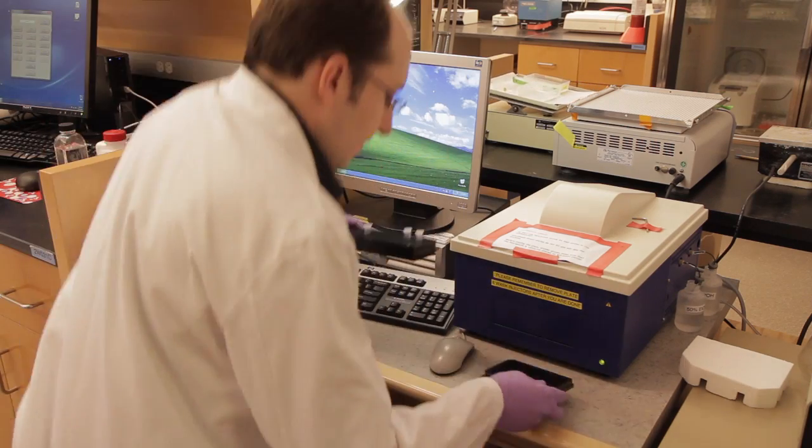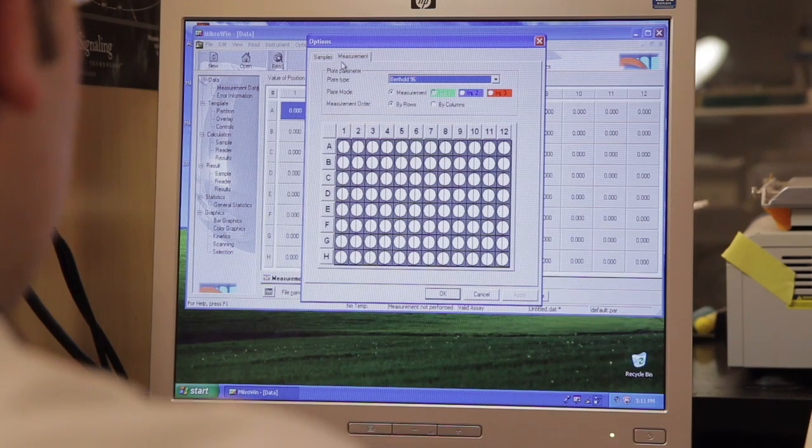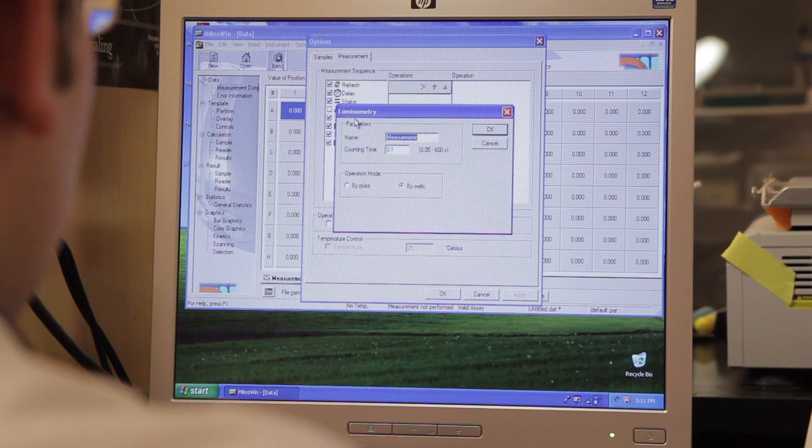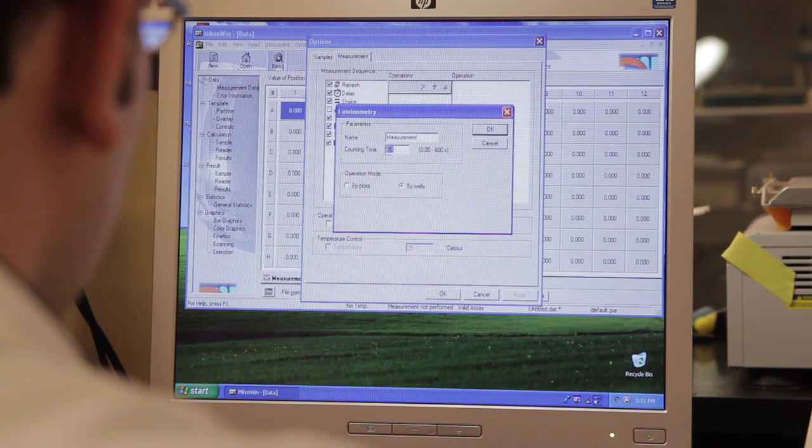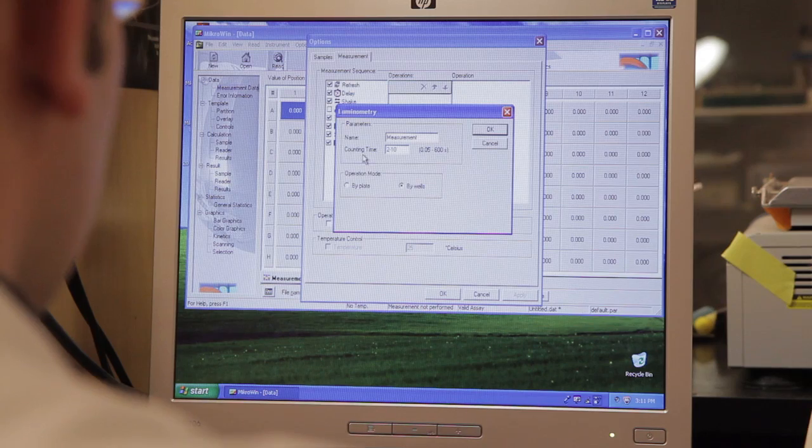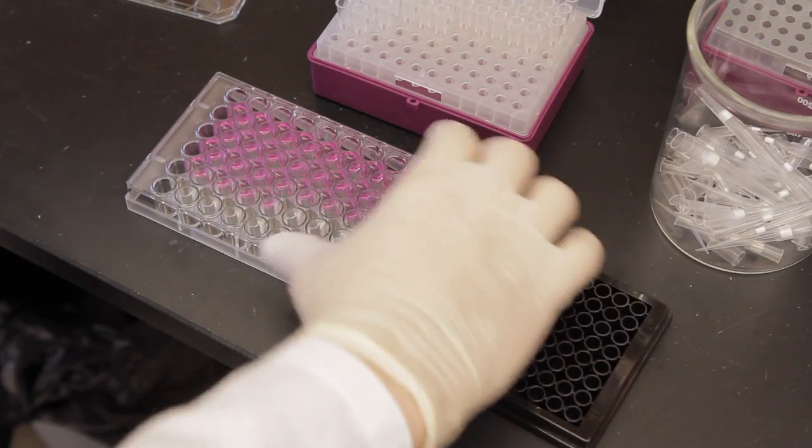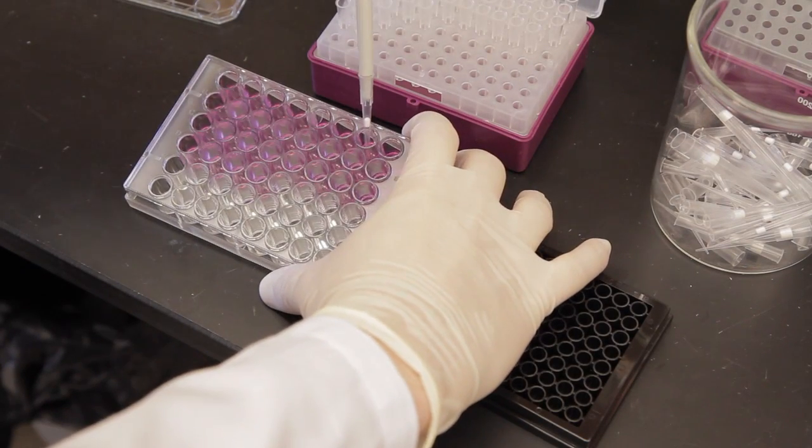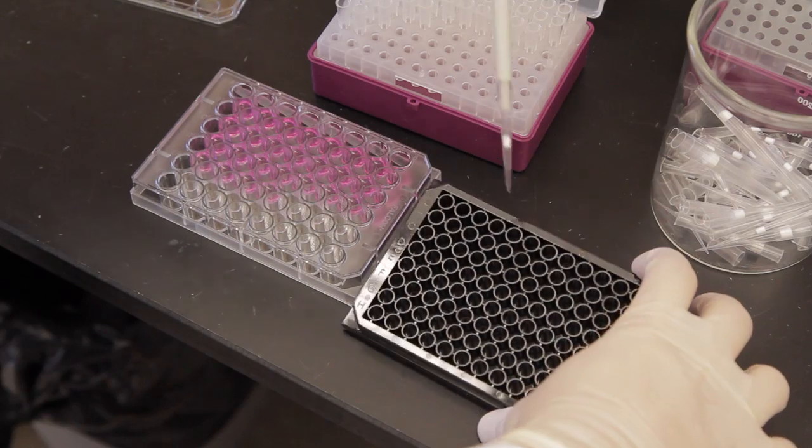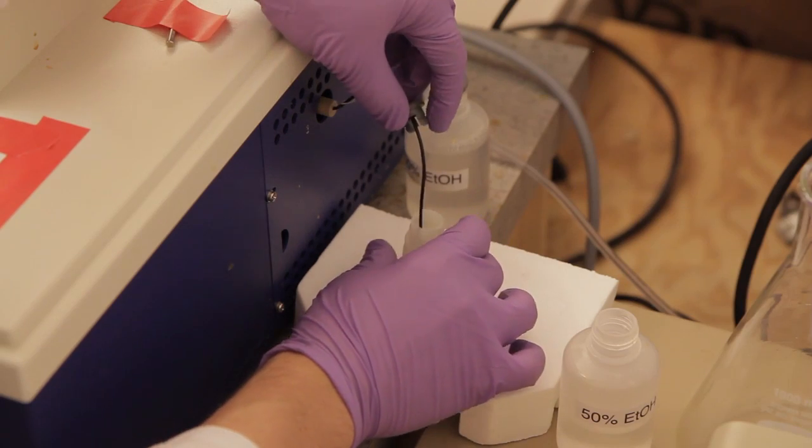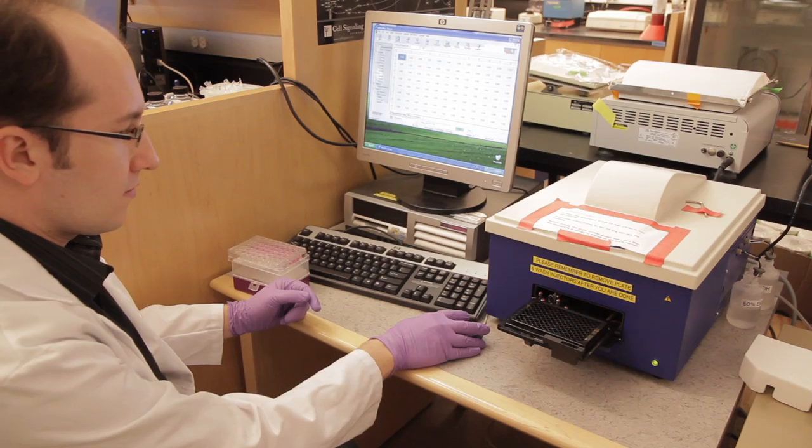With the assay solutions prepared, measure the cell's luminescence using a microplate luminometer. Set the luminometer to inject 50 microliters of assay solution over 2 to 10 seconds. Transfer 10 microliters of each cell culture supernatant to a well of a 96-well black plate. Prime the injector with the assay solution and proceed to measure luminescence.